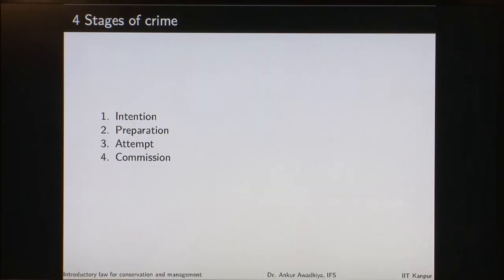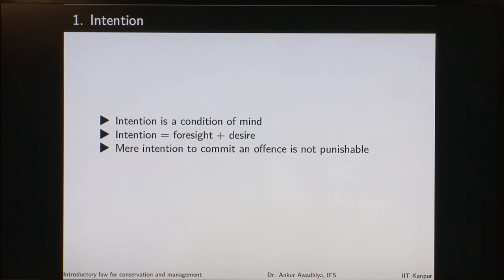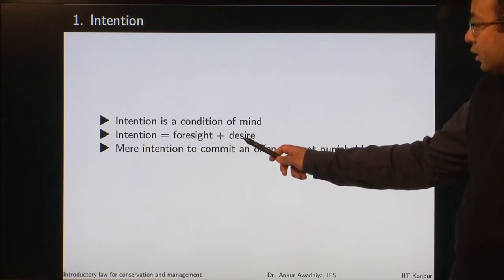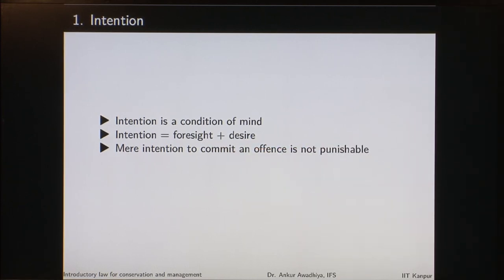Crimes proceed in four stages: intention, preparation, attempt and commission. Intention is a condition of mind — this is the first stage at which a person makes a plan to commit a crime. Intention consists of foresight and desire. Mere intention to commit an offense is not punishable, primarily because intention resides in the mind of the individual and we cannot prove or disprove it. It is covert — only when it becomes overt through certain actions can we know the person had this intention.